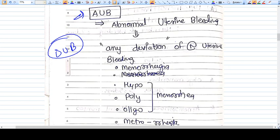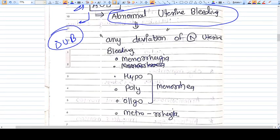AUB is a wider term. AUB is the umbrella under which DUB comes. AUB is abnormal uterine bleeding, so anything deviating from normal menstruation is AUB. DUB is a part of AUB. Abnormal uterine bleeding means any deviation from normal uterine bleeding.